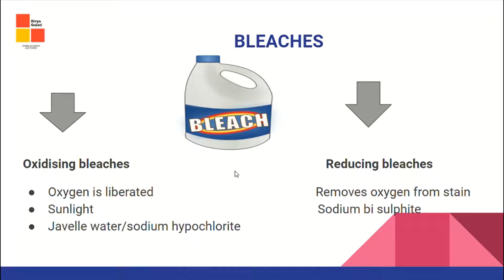Bleaches are chemicals used to bring shine and whiteness to cloth. There are oxidizing bleaches, where oxygen is liberated — examples include sunlight and Javel water such as sodium hypochlorite. There are also reducing bleaches, where oxygen is removed from the stain — sodium bisulphite is an example.